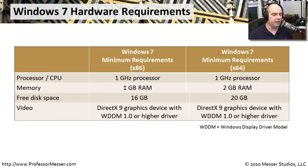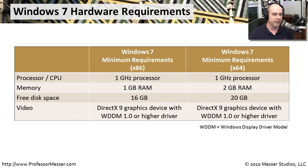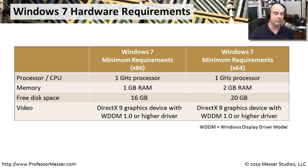Here are the minimum hardware requirements for Windows 7, broken into 32-bit and 64-bit sections. The processor requirement is the same for both: a 1GHz processor at minimum. RAM differs: 1GB is required for 32-bit, while 2GB is the minimum for 64-bit. Disk space is also slightly different — 16GB of free space for 32-bit and 20GB for 64-bit. Video requirements are the same for both: DirectX 9 graphics with a driver that supports the Windows Display Driver Model (WDDM), version 1.0, introduced with Windows 7.